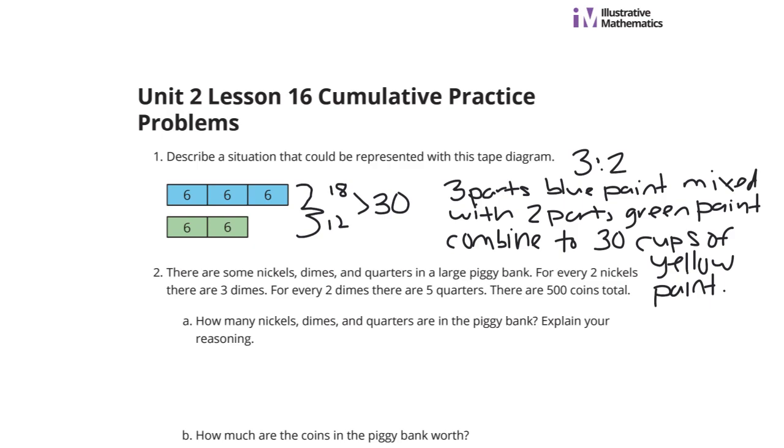Now, question 2, there are some nickels, dimes, and quarters in a large piggy bank. For every 2 nickels, there are 3 dimes. For every 2 dimes, there are 5 quarters. There are 500 coins total. How many nickels, dimes, and quarters are in the piggy bank? Explain your reasoning.